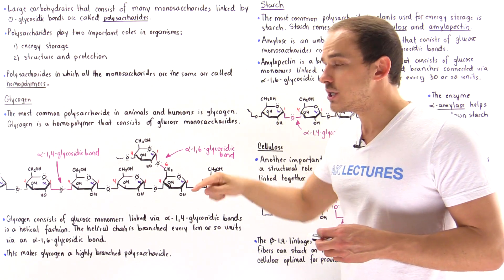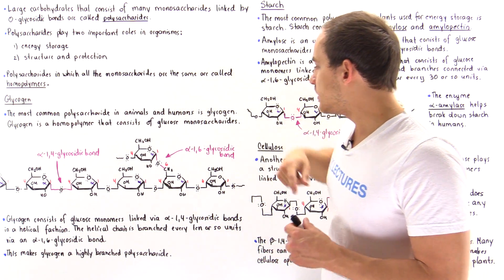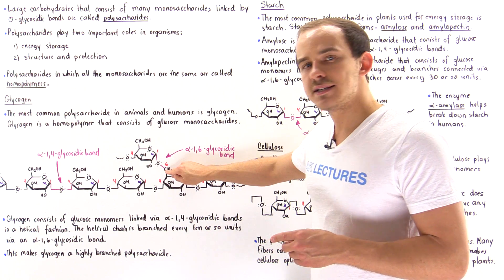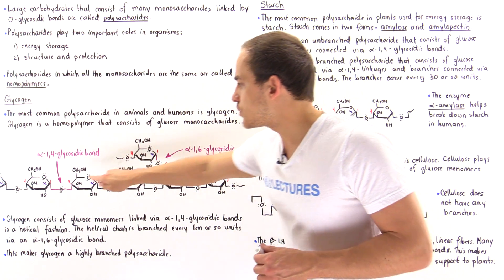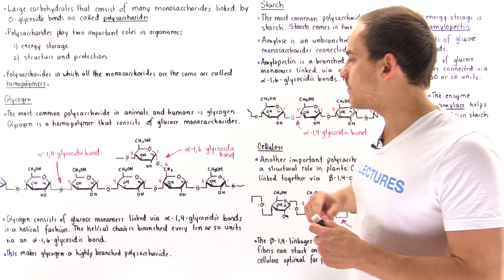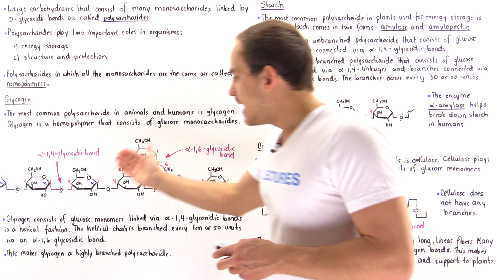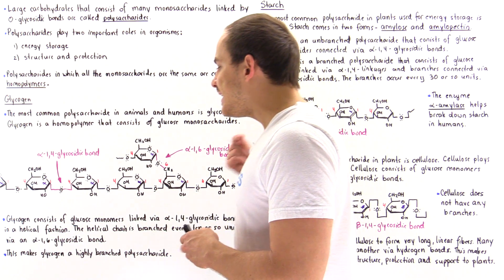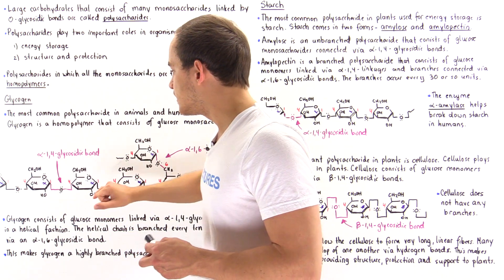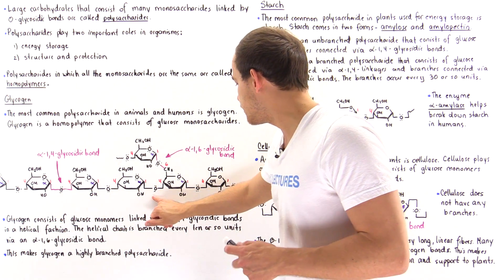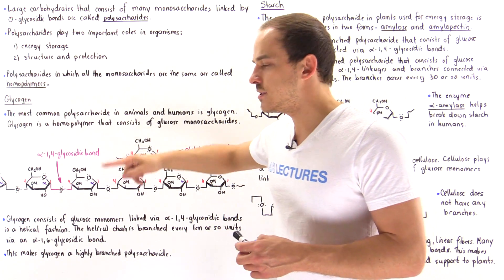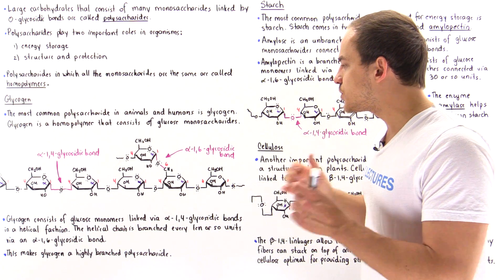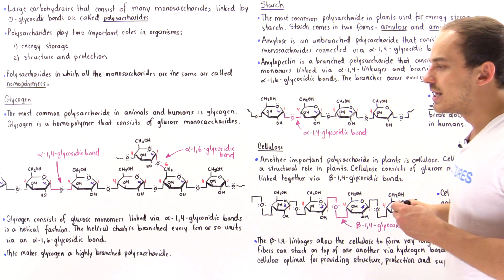These branching points cause branching along the helical structure. We call this an alpha-1,6 glycosidic bond because it's between carbon number one of one sugar and carbon number six of the adjacent sugar molecule. This is an alpha anomer, giving us the alpha-1,6 glycosidic bond. So glycogen consists of glucose monomers linked via alpha-1,4 glycosidic bonds in a helical fashion, with branching points every ten or so units via alpha-1,6 glycosidic bonds.